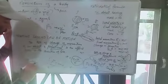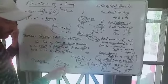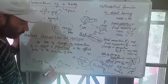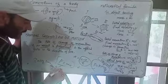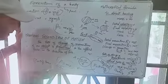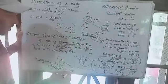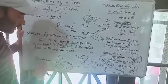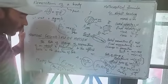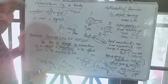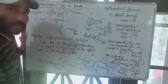The SI unit of force is kilogram meter per second squared, which is also called the Newton. One Newton is equal to one kilogram meter per second squared. To define one Newton: it is the force required to give a 1 kg body an acceleration of 1 meter per second squared.